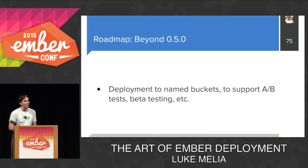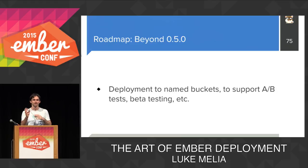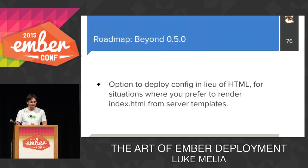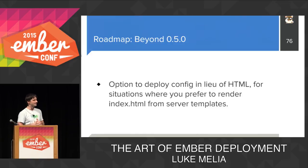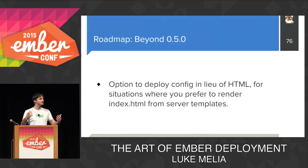Beyond 0.5.0, we'd like to support deployment to named buckets to support A/B testing and beta testing. You've probably used apps where the end user can toggle between classic and beta, to get people experiencing a new version without putting them at risk because it doesn't have all the features of the current version. We'd also like to support a scenario for people where deploying the full HTML isn't a great fit — where it makes more sense to deploy configuration information: what are the JavaScript assets, what are the CSS assets, and what configuration options let the server merge with its own to produce the final page.